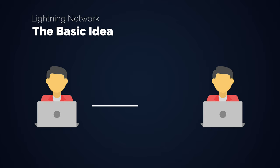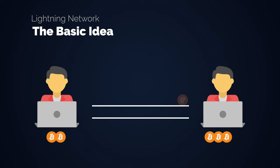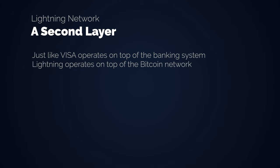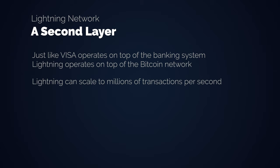Lightning enables peer-to-peer payments that happen off-chain through payment channels between individuals. Once the involved parties close their channels, a final settlement occurs on the blockchain to ultimately settle who owns what. This is why the Lightning Network is called a second layer, similar to how Visa or Mastercard are higher layers on top of the existing financial system. Lightning can scale to millions of transactions per second, while transactions are almost free. You pay fractions of a cent to send money across the world instantly. So how does it work?